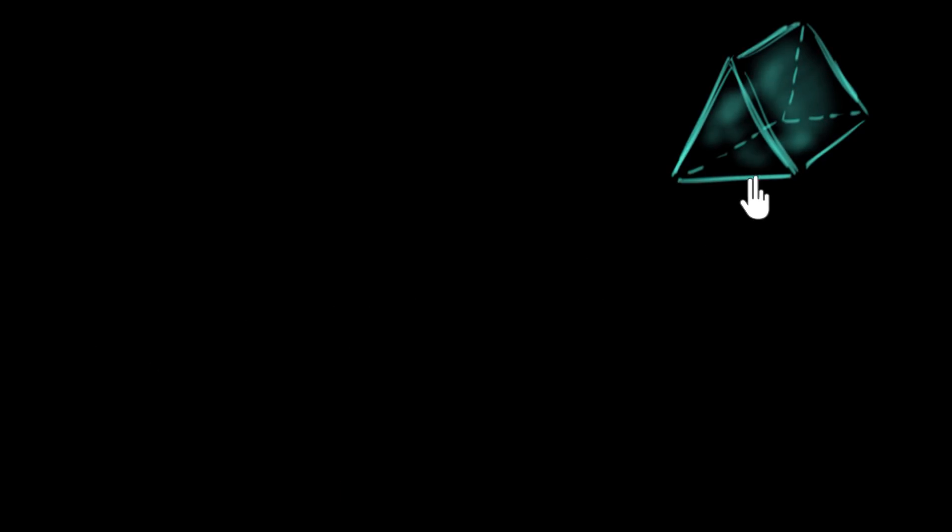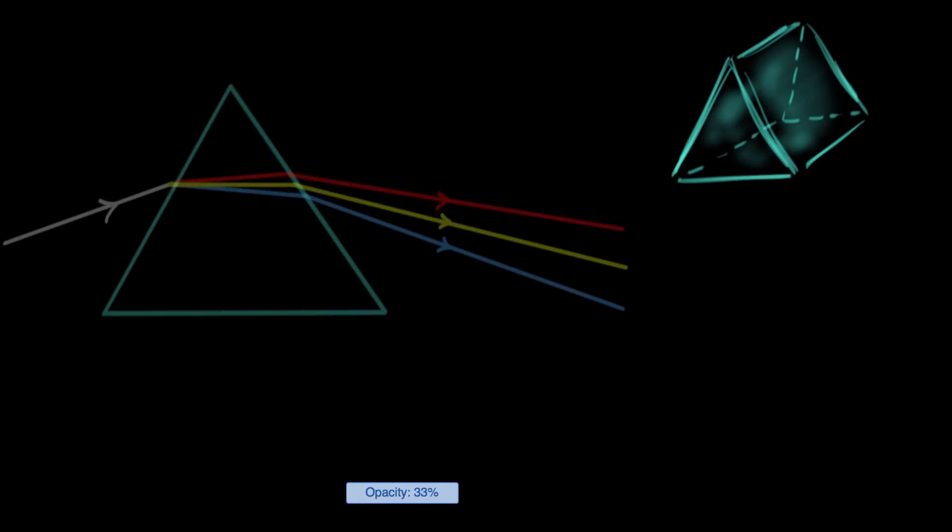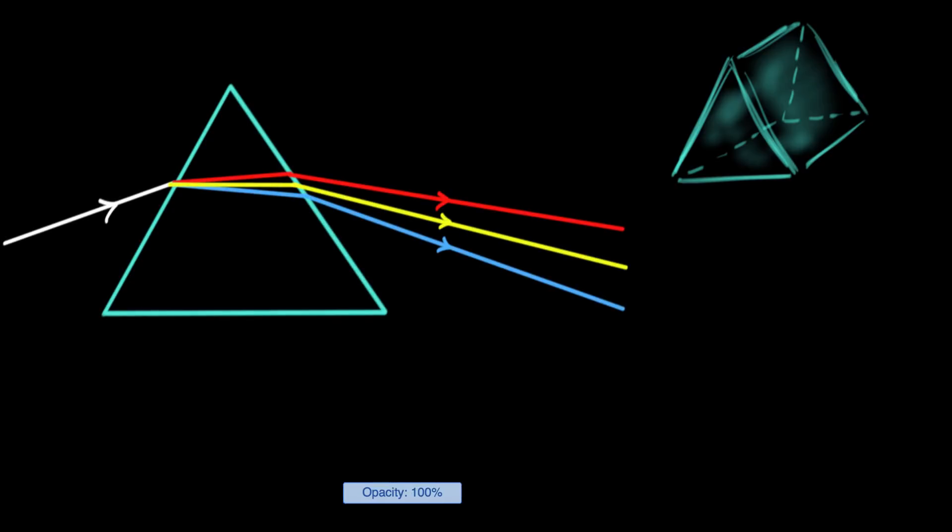Prisms are usually pieces of glass which have two triangular faces which are connected by three rectangular faces like this. And you may already know the famous experiment that when you shine white light through a prism, it splits into the seven colors of the rainbow.